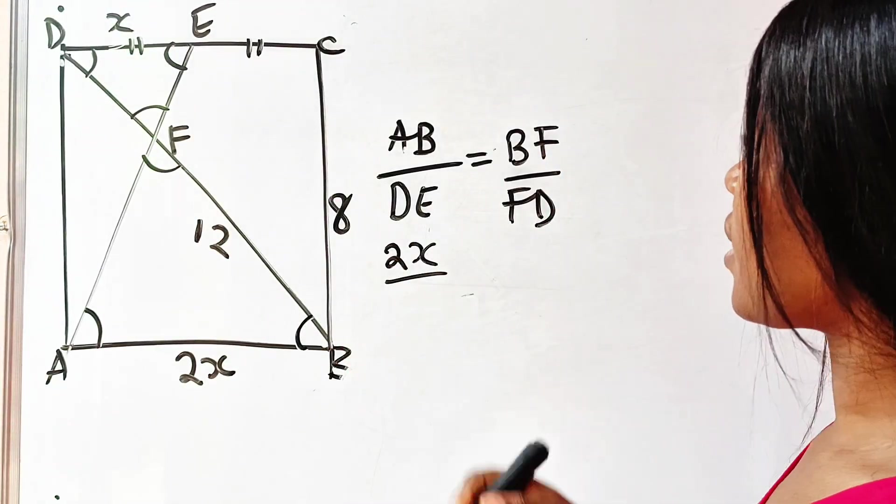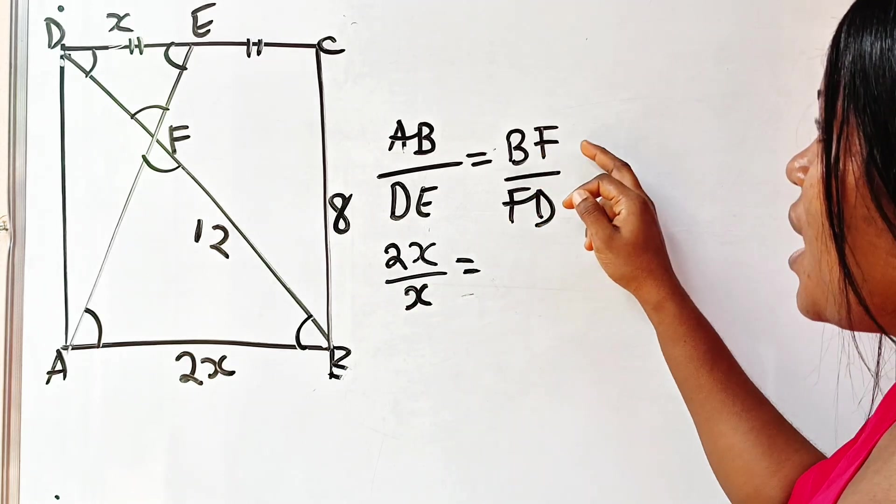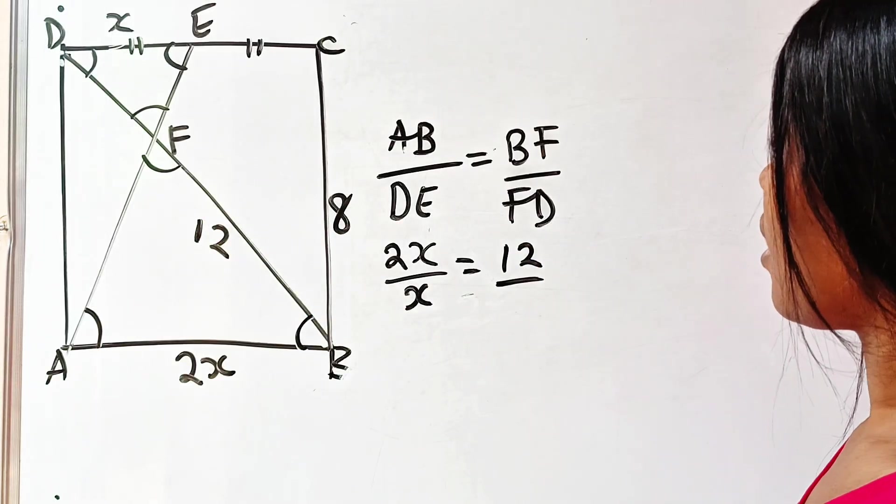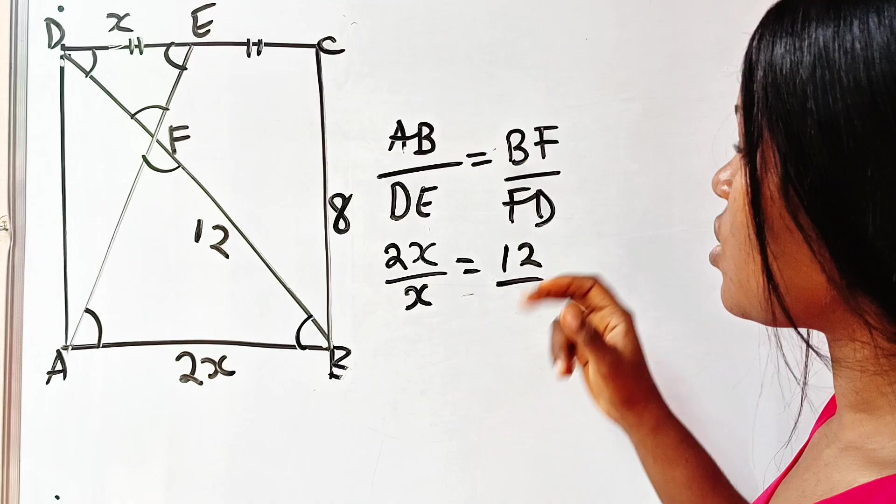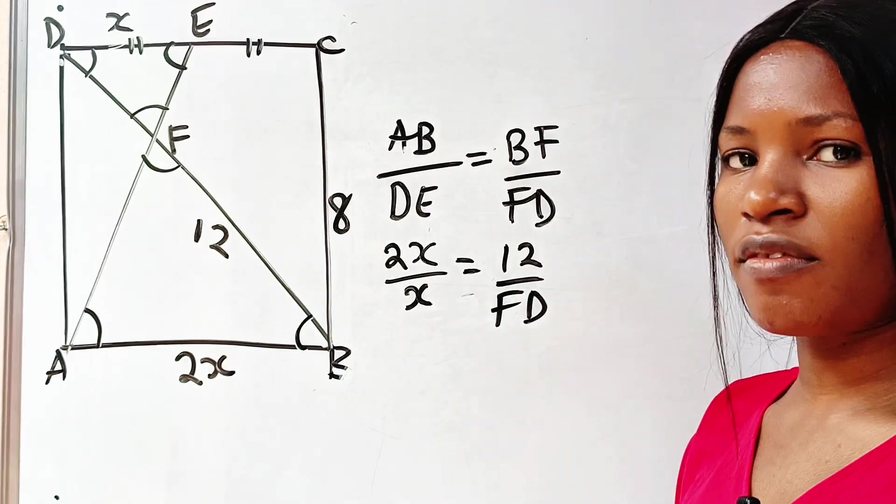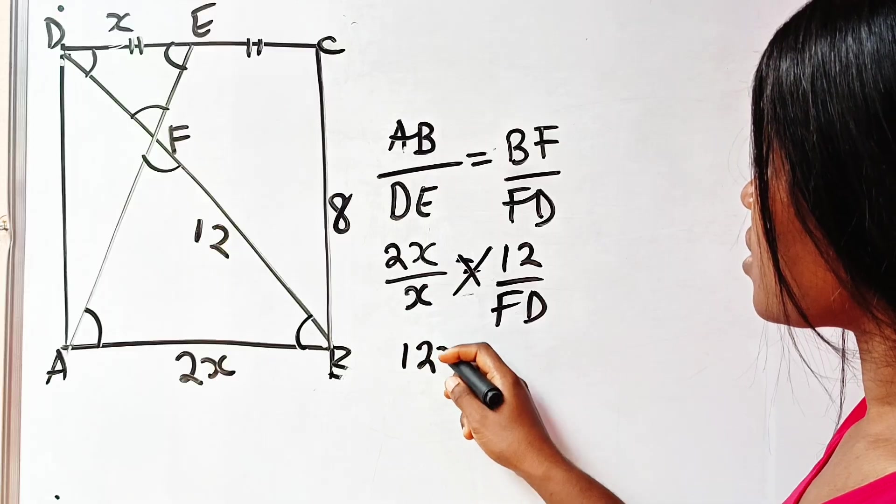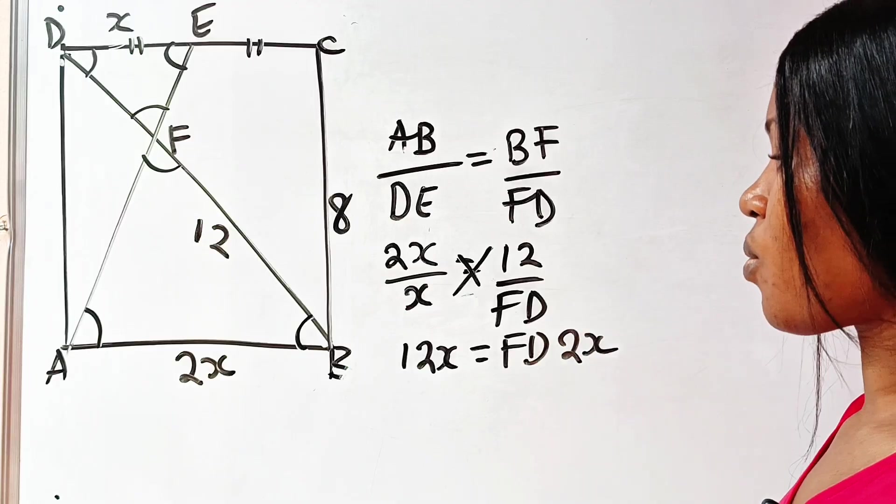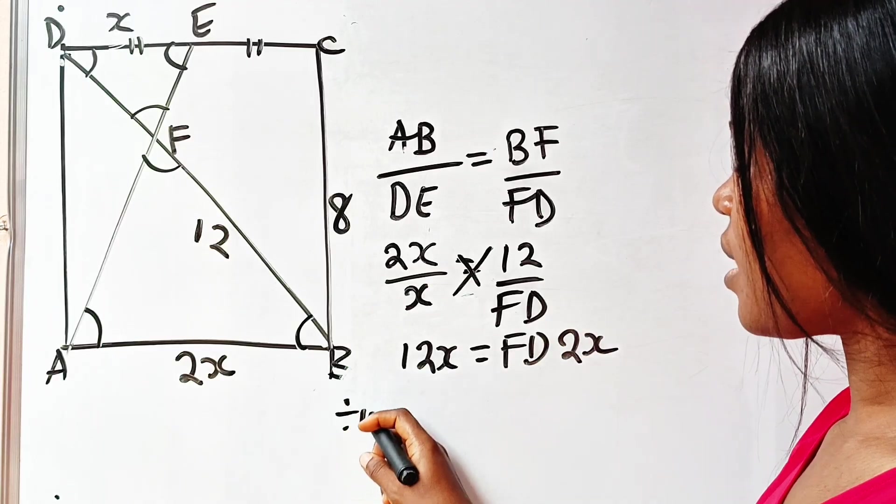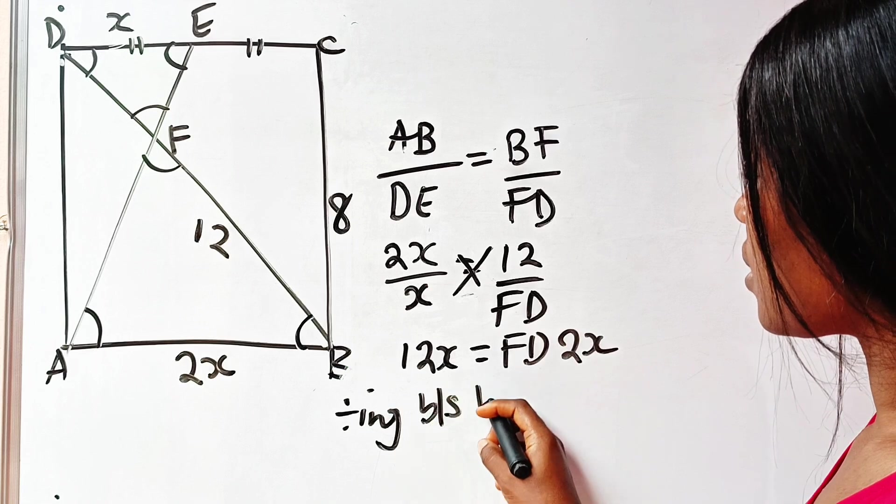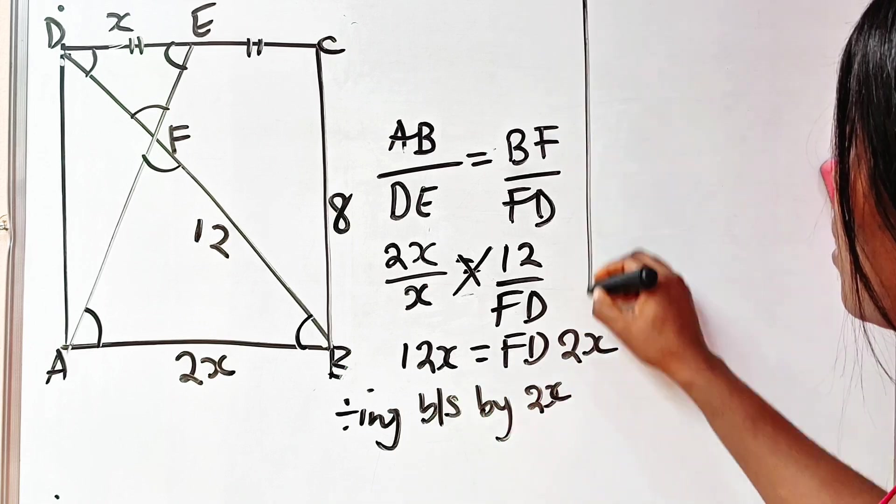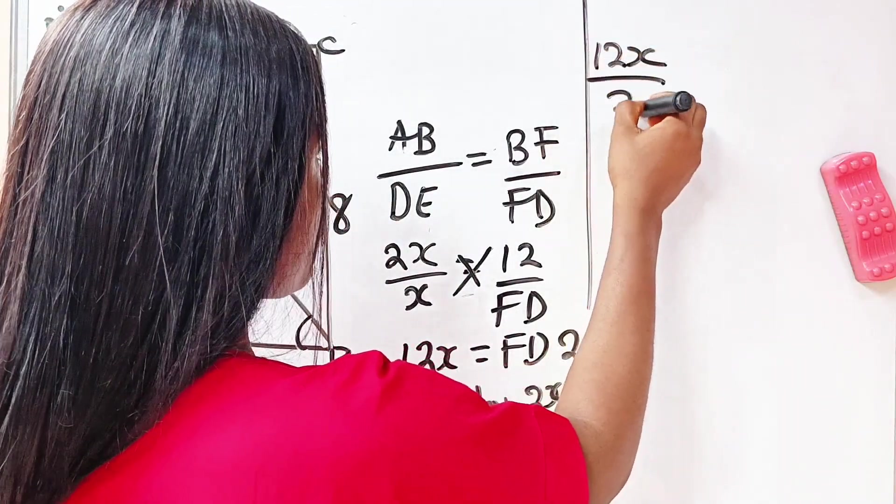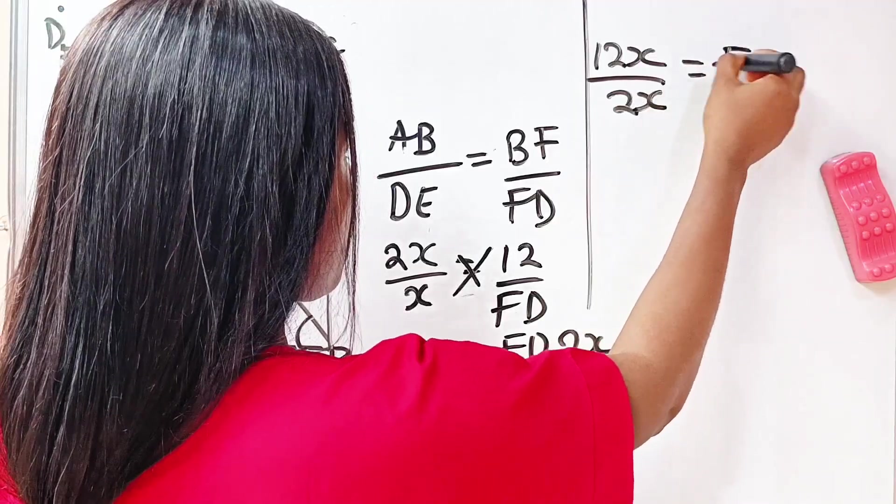So we have 2x over x is equal to—now BF, our BF is 12, all over FD, which is unknown. We don't know FD. So if we cross multiply, we have 12x is equal to FD times 2x. Dividing both sides by 2x.